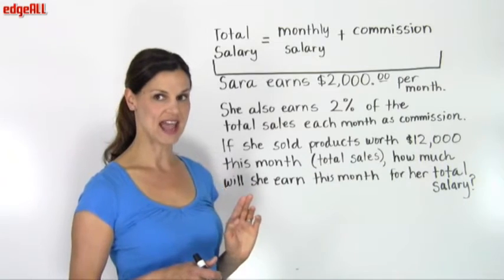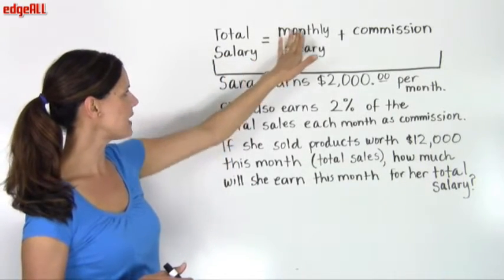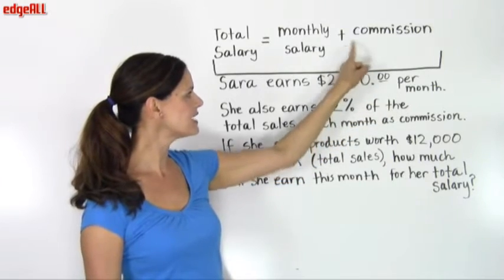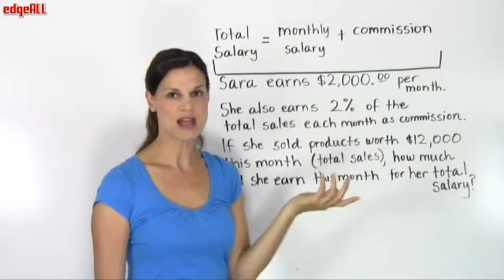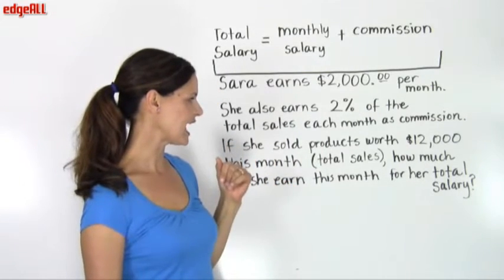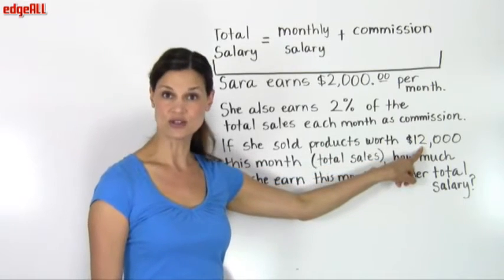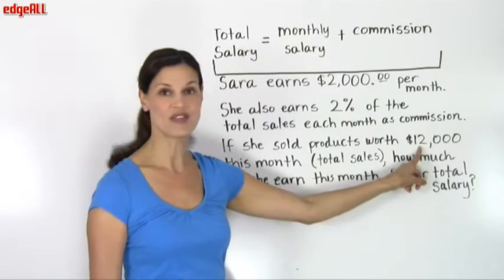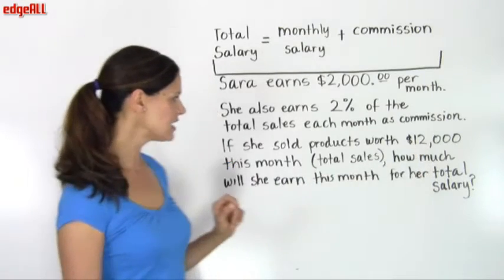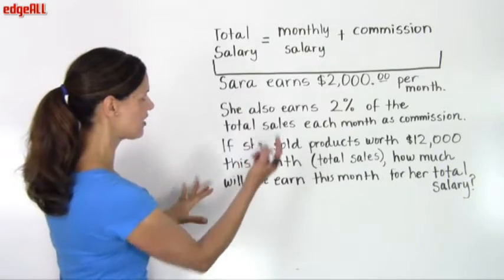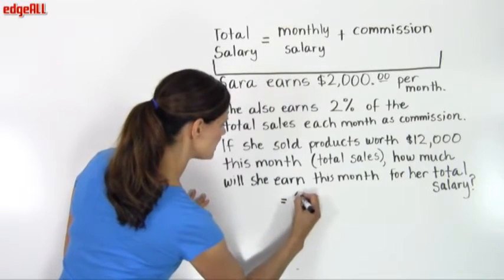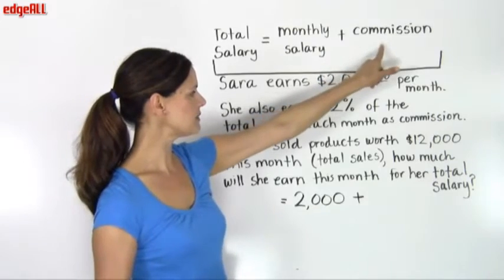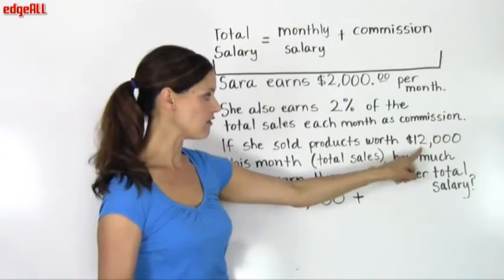Let's take a look again at our equation of total salary equals the monthly salary. We know that Sarah has a monthly salary of $2,000 per month, plus she also gets this additional commission for how much product she sells. In this month that we're looking at she sells $12,000 worth of product and she's going to earn her commission on 2% of those $12,000 worth of product that she sold.